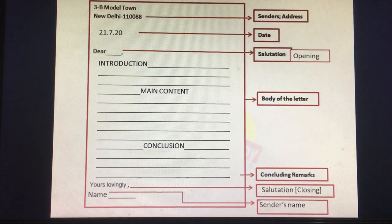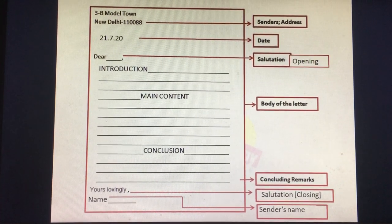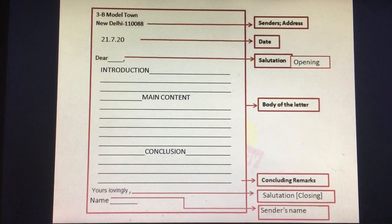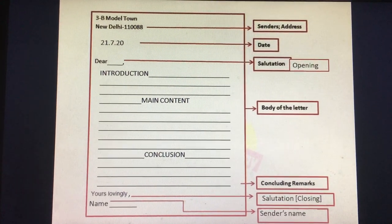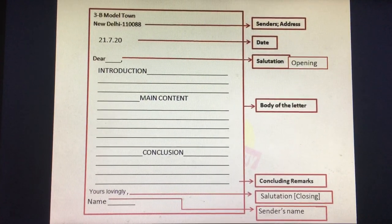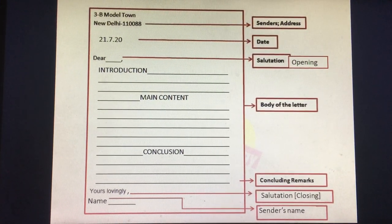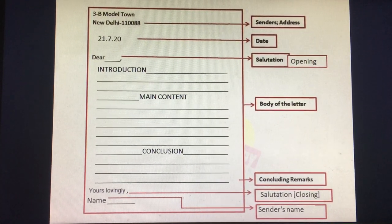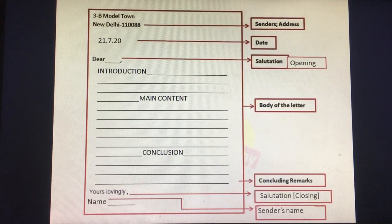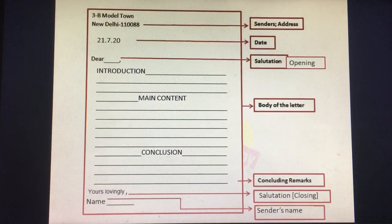Again leave one line and then write the opening salutation, that is 'Dear' followed by the person's name to whom you are writing, and then give a comma. An informal letter can be addressed to different persons like your parents, a friend, a cousin, grandmother, grandfather, or any other relatives. Again give a line and then we begin the body of the letter.